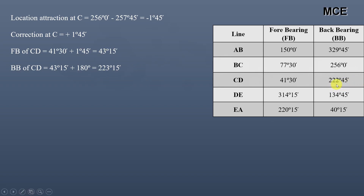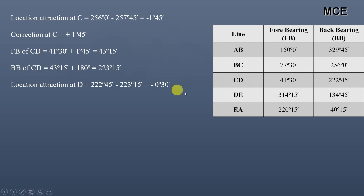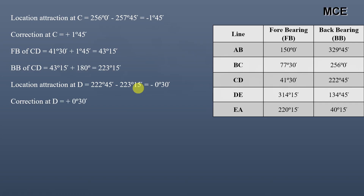The observed back bearing of line CD is 222°45', so again local attraction is present at station D. Its value equals observed minus correct: 222°45' minus 223°15', which equals minus 0°30'. So the correction to bearings taken from station D is plus 0°30'.